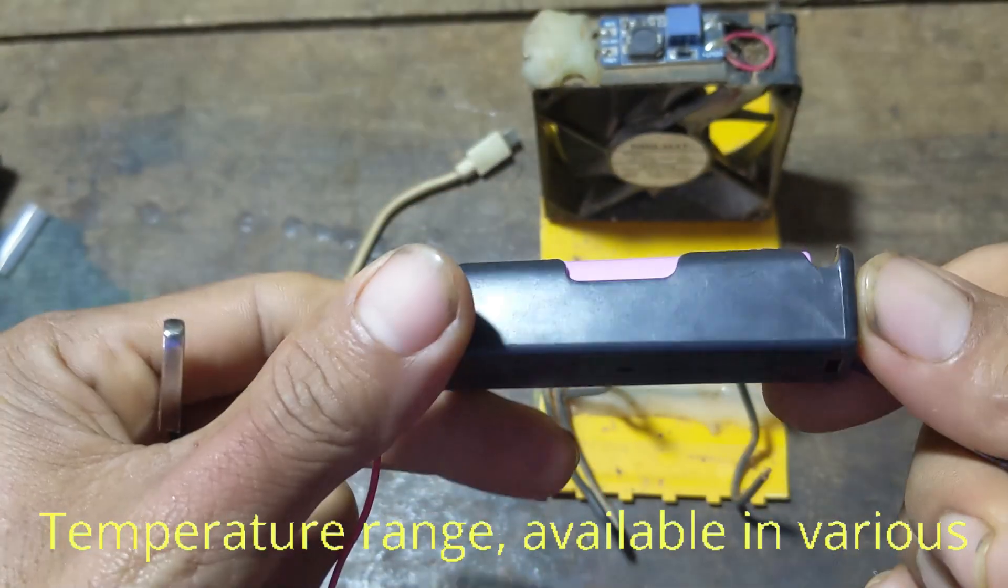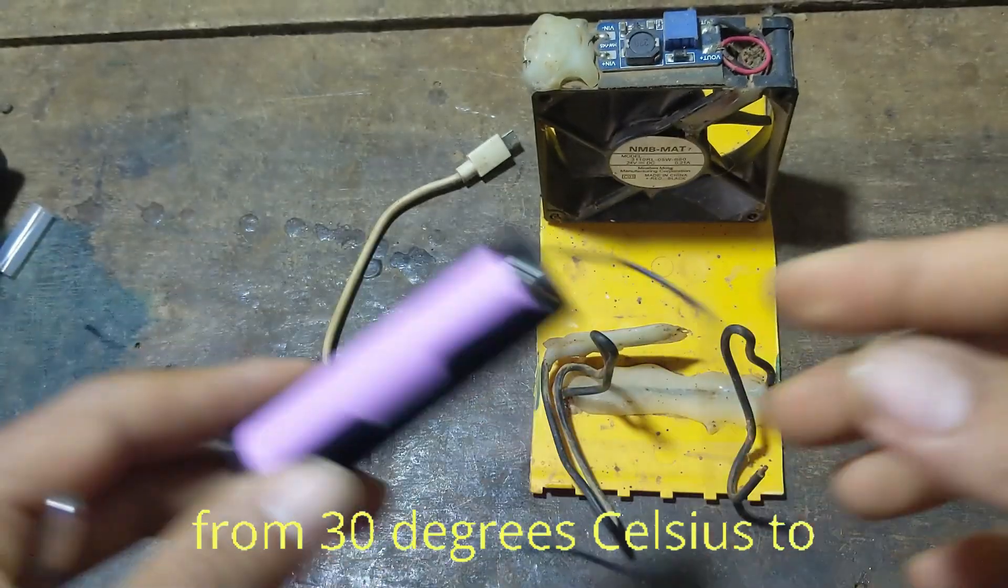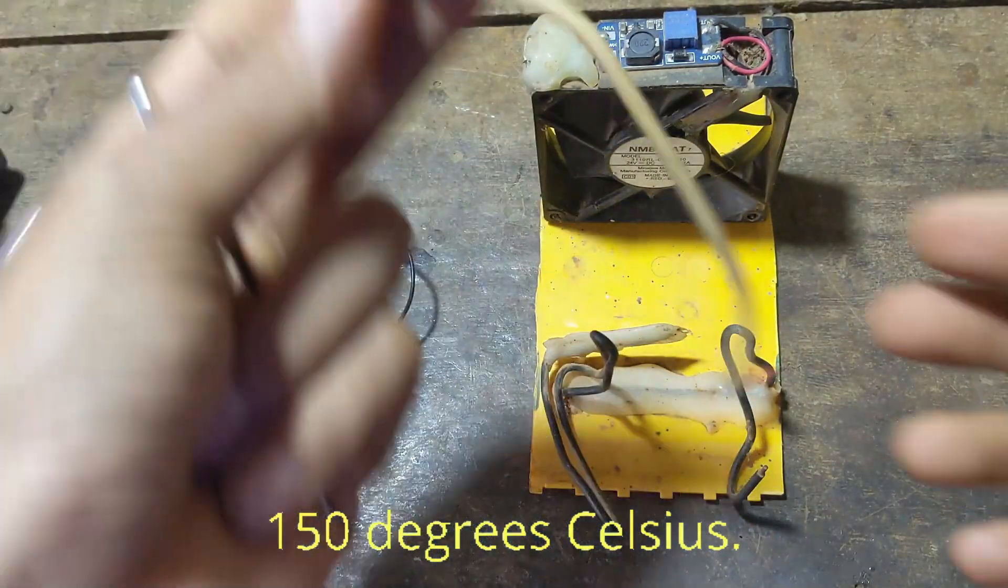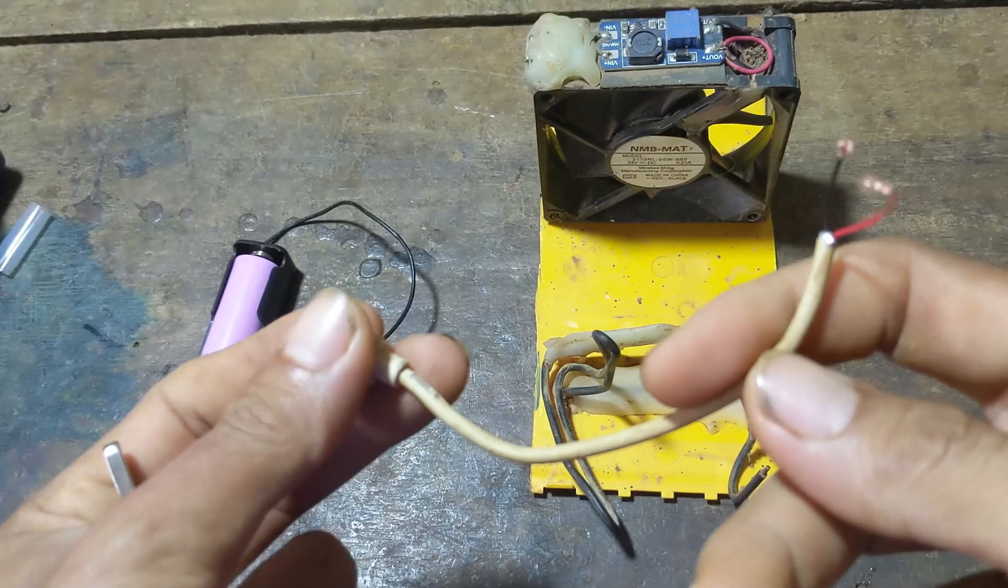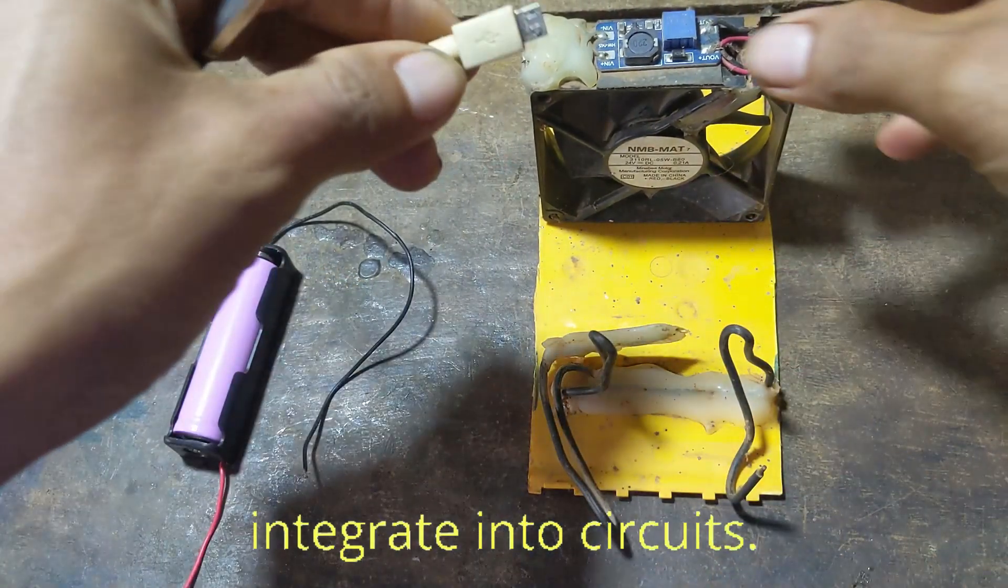Temperature range: available in various temperature ratings, typically ranging from 30 degrees Celsius to 150 degrees Celsius. Compact size: small and easy to integrate into circuits.